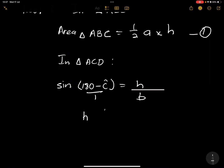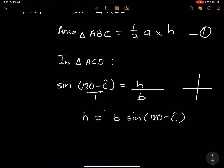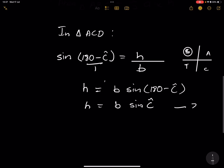If I cross multiply, H will be B multiplied by the sine of (180 minus angle C). Now, using our CAST diagram, 180 minus C is in the second quadrant, and sine is positive in the second quadrant. So this simply becomes H equals B times the positive sine of angle C. That is equation 2.